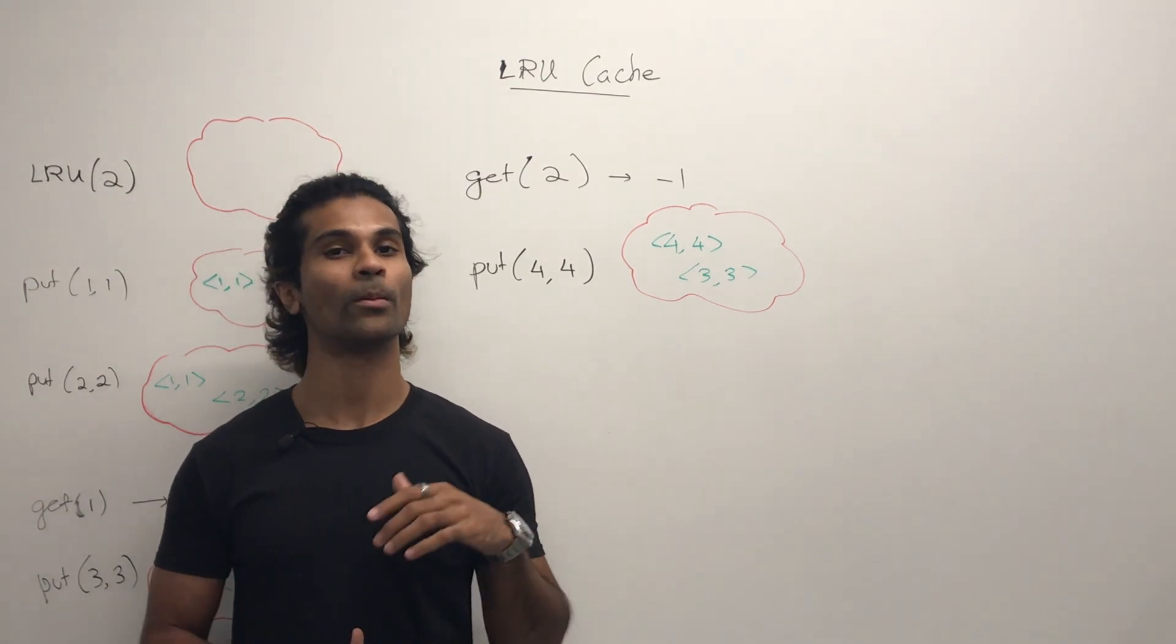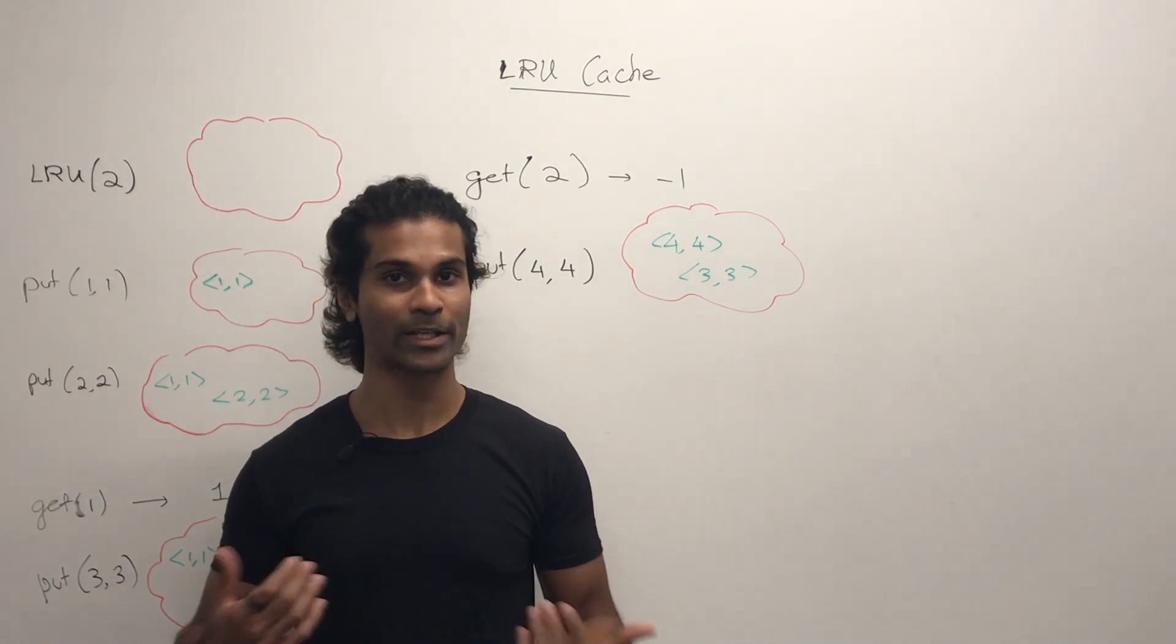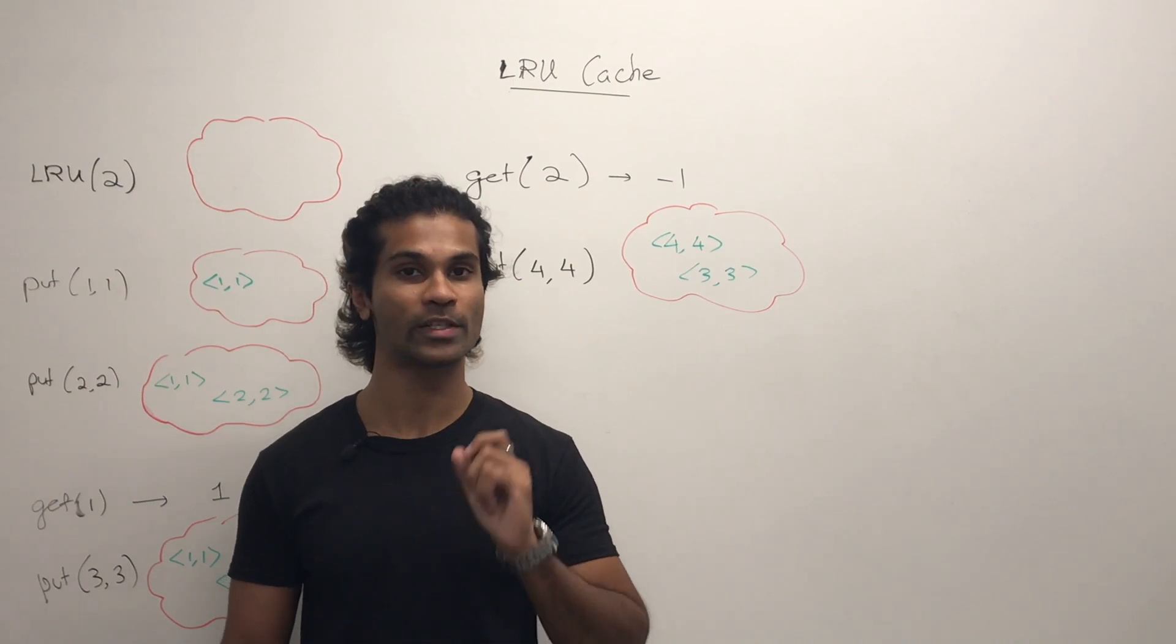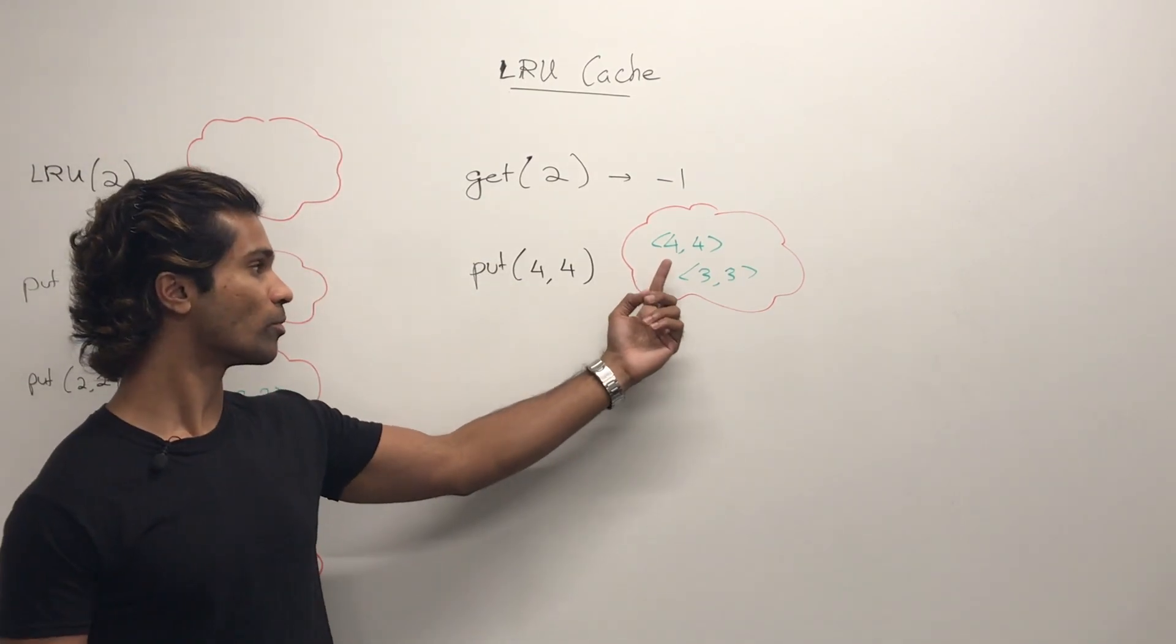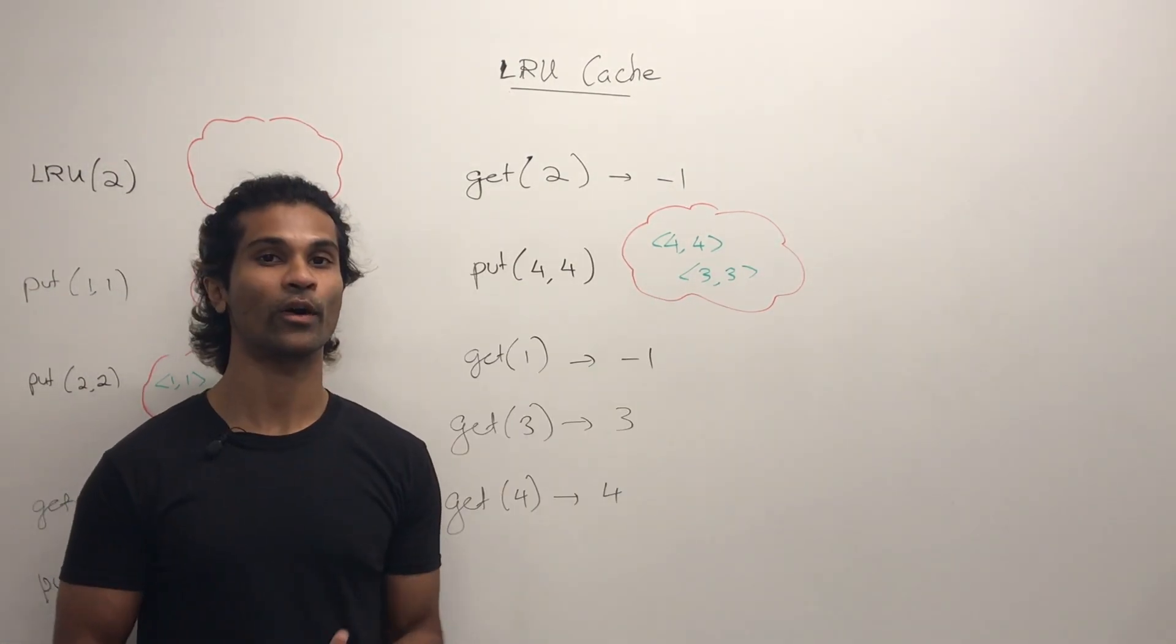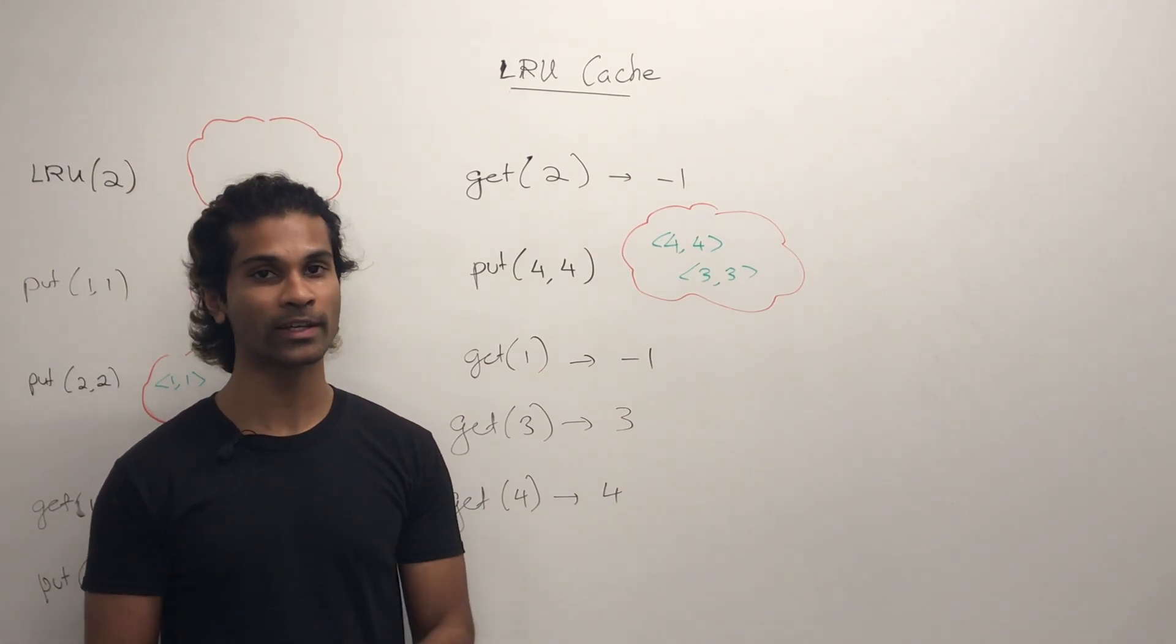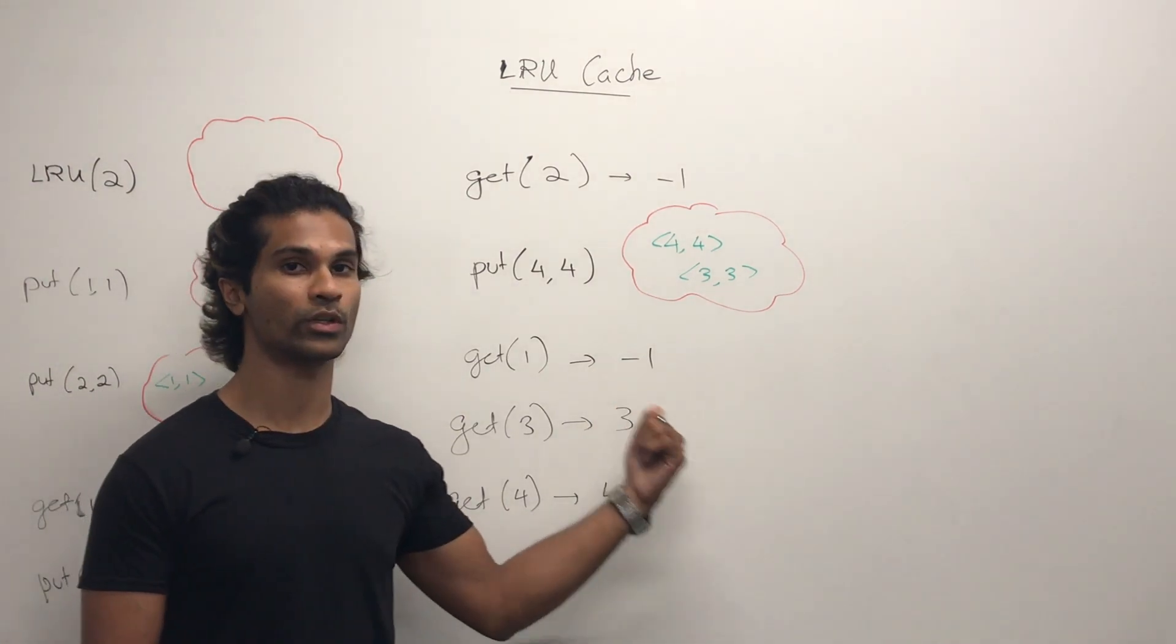I call put of 4,4. Again, we've reached the maximum capacity. So we're going to evict the oldest entry. Then we end up with 4,4 and 3,3. Finally, we call get a few more times. If it's there in the cache, we return the value. Otherwise, we return negative 1.